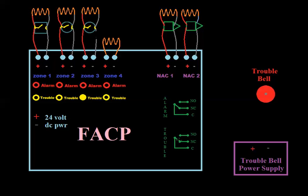So it's no longer here — the relay changed states. Now let's say we had this trouble bell. We take our power from — right here I drew a power supply. You could use power off the panel, but let's say they had an external power supply for their trouble bell. Go right from the negative, just like we do in our alarm, right to the bell.